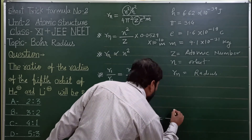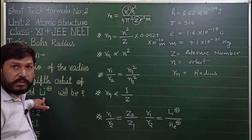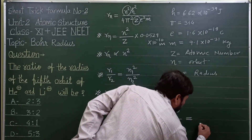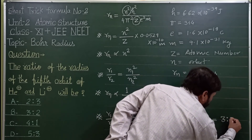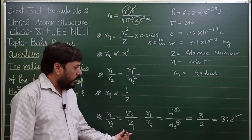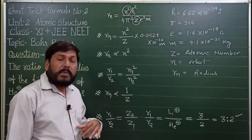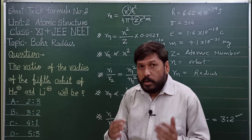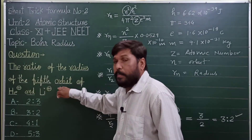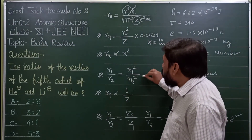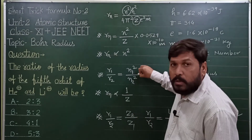तो answer अपना क्या आना चाहिए — 3/2, यानि 3:2 is the correct answer। देखिए कितने कम समय में आप question को solve करते हैं। We also have the atomic numbers of helium (Z=2) and lithium (Z=3). The radius is in the fifth orbit, so n is constant, and using r1/r2 = z2/z1, the answer is 3/2.